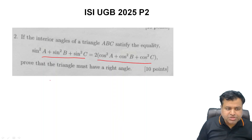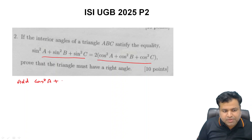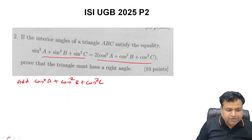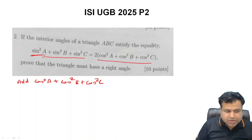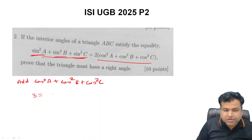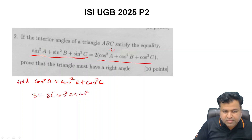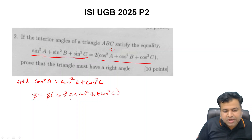This is an easy question. Let's add cos²A + cos²B + cos²C to both sides of the equality. Adding these terms, the left side becomes (sin²A + cos²A) + (sin²B + cos²B) + (sin²C + cos²C) = 1 + 1 + 1 = 3. The right side becomes 3(cos²A + cos²B + cos²C). These cancel, giving us cos²A + cos²B + cos²C = 1.